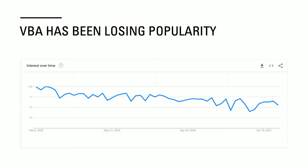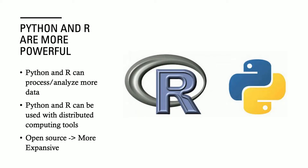You can contrast this to languages like Python and R, which are also statistical programming languages that have been maintaining their popularity throughout the past several years. The next reason why you shouldn't learn VBA is that for a lot of workloads, there are better options — namely Python and R.